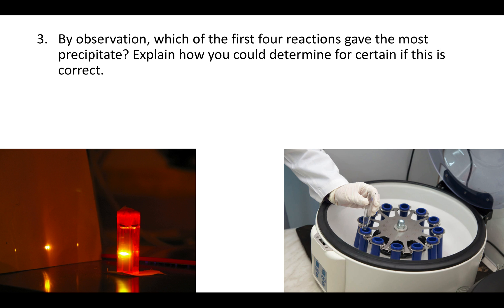Another way, which is not as preferred, is spectrophotometry, represented by the picture on the left. You place the solution in a small glass or crystal container called a cuvette, make it as homogeneous as possible, and then shine light through it. The less light gets through, the more solid you have, because the solid prevents light from passing. You can measure quantitatively how bright the light is on the other side with a detector. However, this method is less preferred because it would be difficult to make a mixture of liquid and solid perfectly homogeneous.